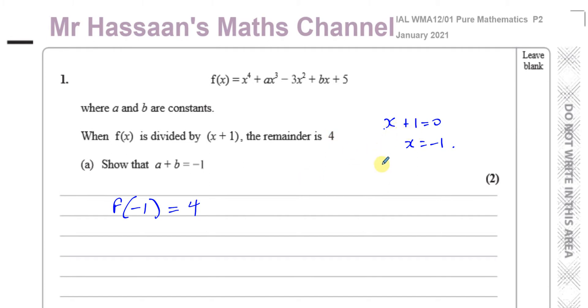If x + 1 was a factor, then the remainder would be 0 and f(-1) would cause this whole thing to become 0. But it's not a factor because there's a remainder. So the remainder is 4. That means if I substitute -1 into this expression, it's going to equal 4. So let's do that.